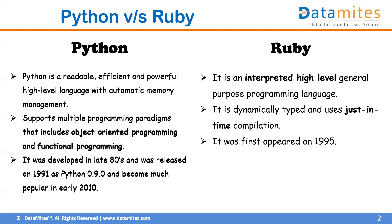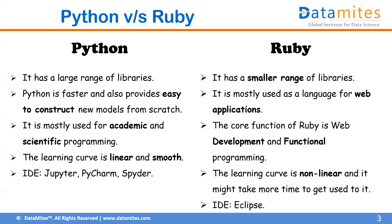Now let's view this from the aspect of machine learning and data science, which is our main focus. Python has a large range of libraries — a large pool of libraries containing a large number of collections. Ruby, on the other hand, provides only a smaller range of libraries for computational power.